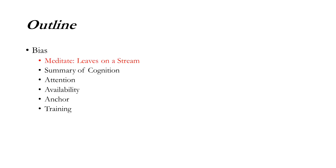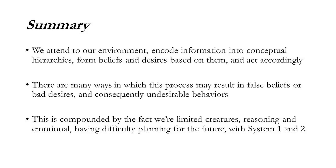I'm going to give you a brief summary of some of the stuff we discussed last time — namely a general, very broad, high-level model of cognition. Summarizing: we attend to our environments, we encode information into conceptual hierarchies, we form beliefs and desires based on those hierarchies, and then we behave accordingly. There are many ways in which this may result in false beliefs or bad desires, and consequently undesirable behaviors.